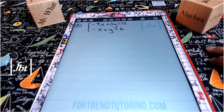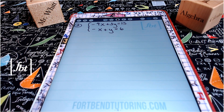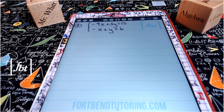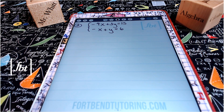Problem number two: we have negative 4x plus 3y equals 15 and negative x plus y equals 6 for our system of linear equations. One thing about this problem you should note is that the equations are not in the standard form I described earlier. However, it is in standard form according to some textbooks — standard form isn't standard across all textbooks and classrooms, so you'll have to ask your teacher whether the a value must be positive or can be any real number.